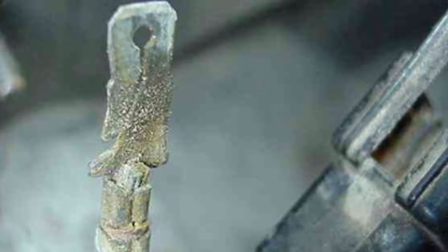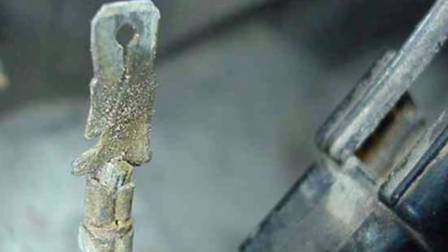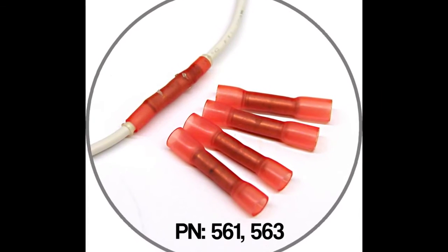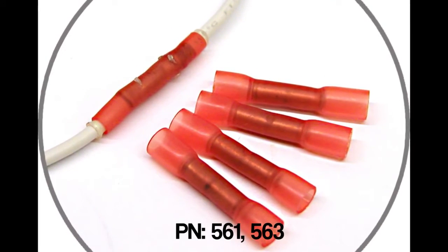Because of this, wire nuts, quick splice taps that simply pierce through the wiring insulation, and other types of unsealed connectors should never be used on a trailer. The only type of connectors that Peterson recommends is adhesive-filled heat shrink butt connectors, such as Peterson part numbers 561 and 563.